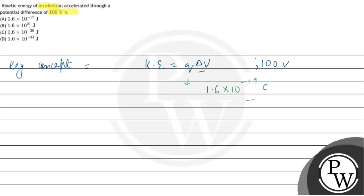If we substitute these two, then we will have kinetic energy. Kinetic energy is equal to 1.6 into 10 to the power minus 19 into 100.